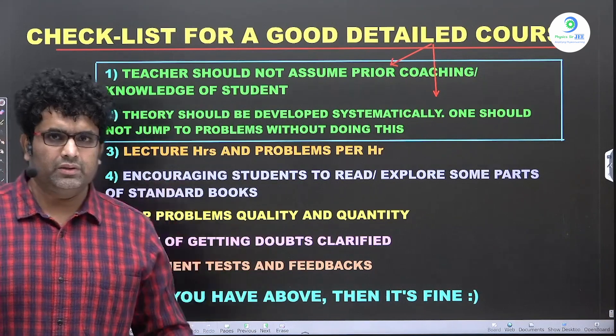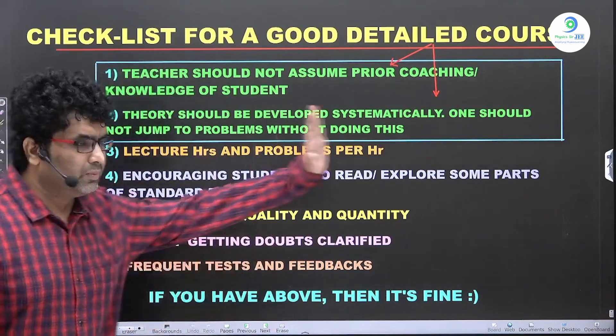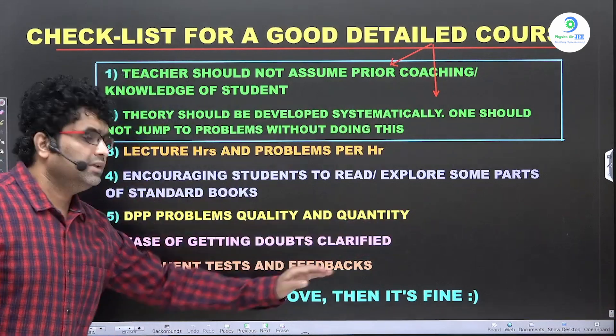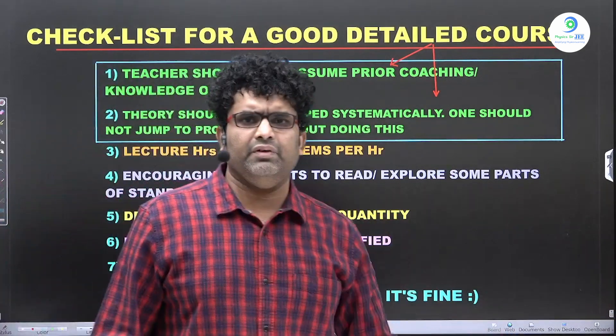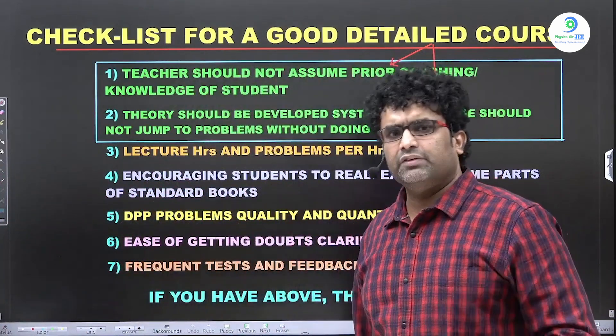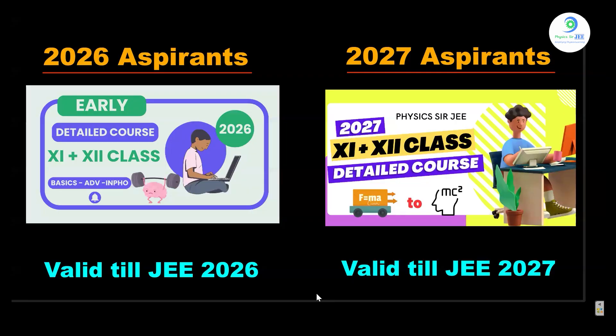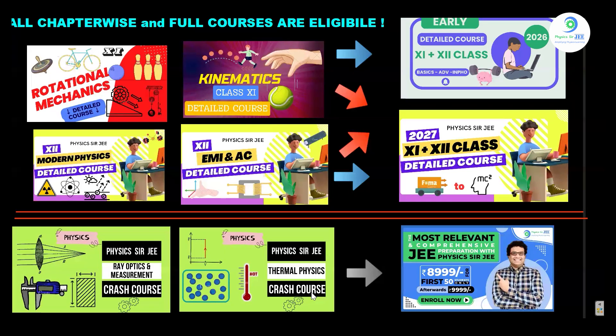Ease of getting doubts clarified is important, and frequent tests and feedback are provided — every week there will be a test for that particular week across the 34 weeks. I hope you now understand the required checklist for choosing a good detailed course. If you are interested in JEE Advanced 2026 or 2027 courses, please also check the course validity, as that determines the price of the course.